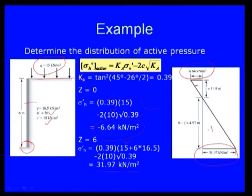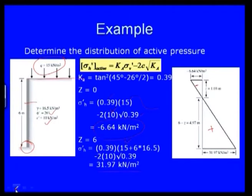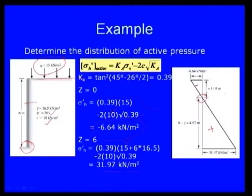The next step is to find the depth at which earth pressure equals zero — where the pressure transitions from negative to positive. Setting sigma H prime equal to zero and solving for z, it comes out to z equals 1.03 meters. From this depth the pressure changes from negative to zero and then becomes positive.